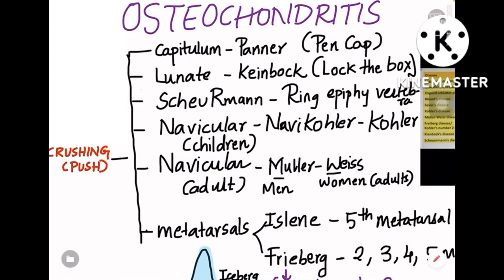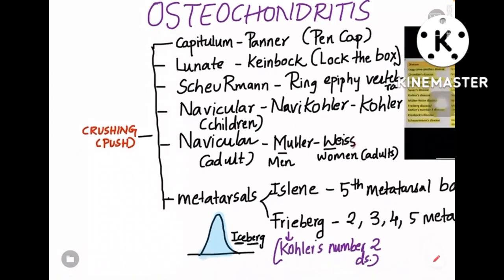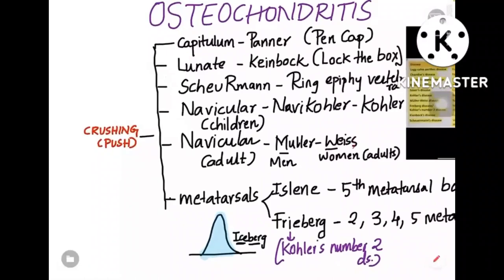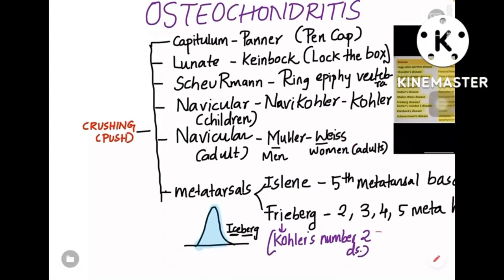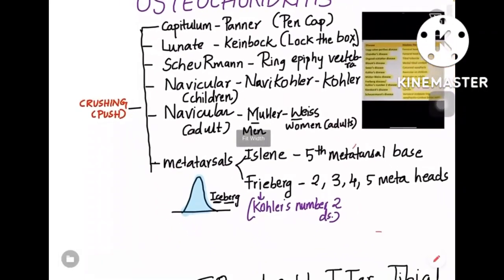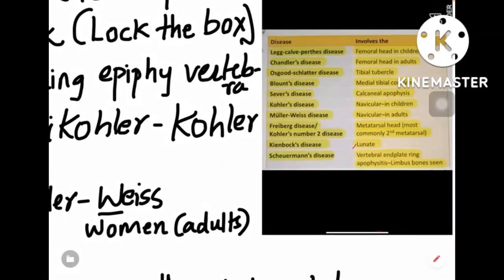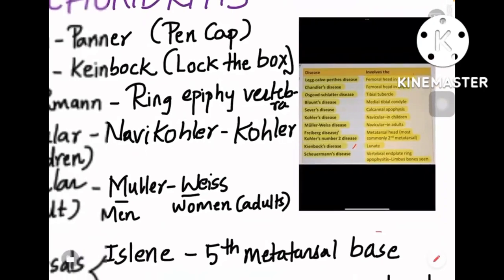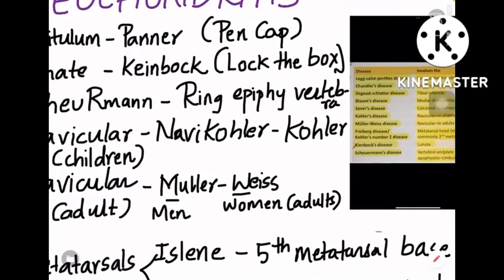The usual causes for osteochondritis are trauma or physical activity that causes stress to the bone, leading to ischemia and necrosis of that part. There are many names to learn, gathered from notes and a screenshot shared on Telegram.